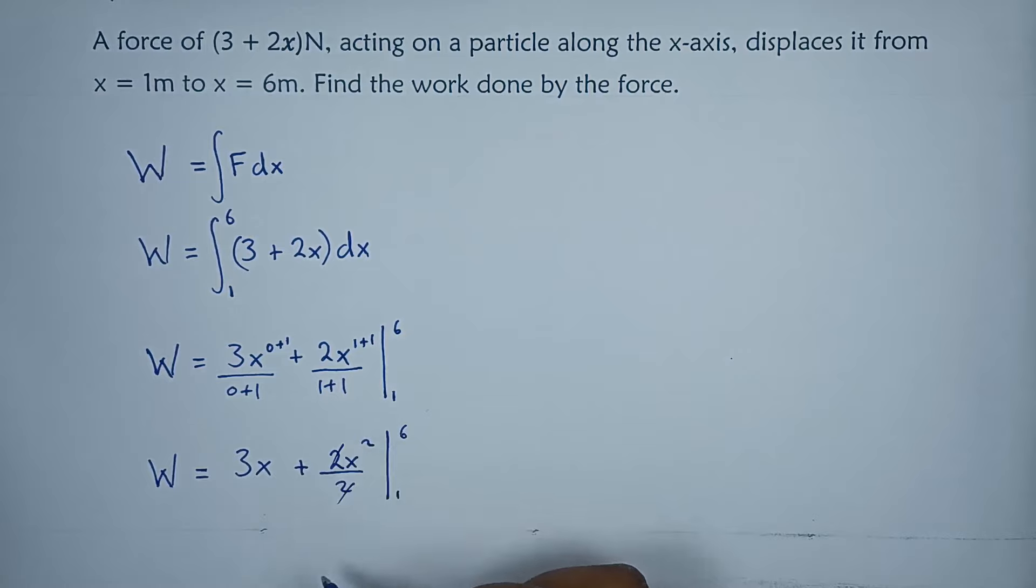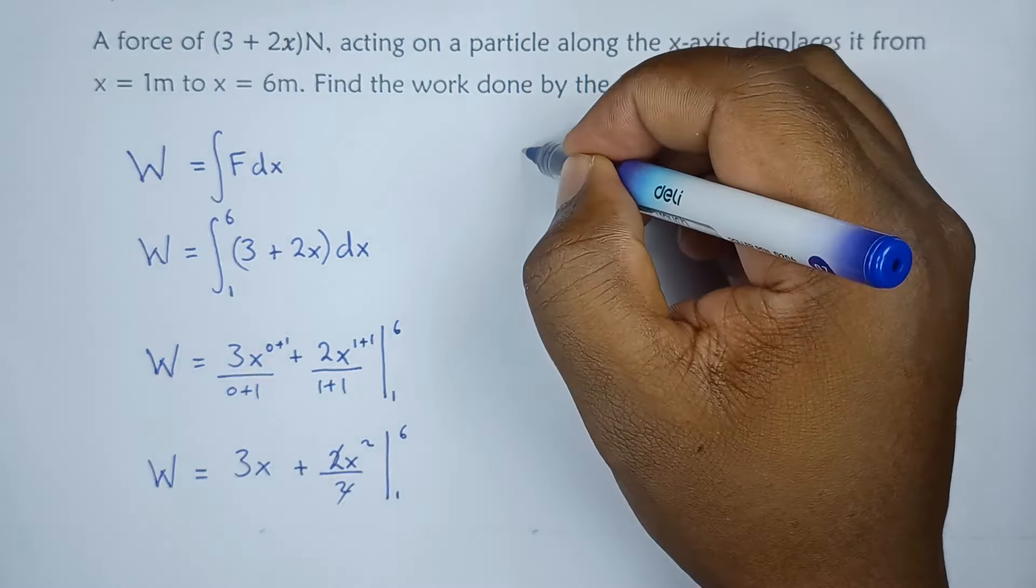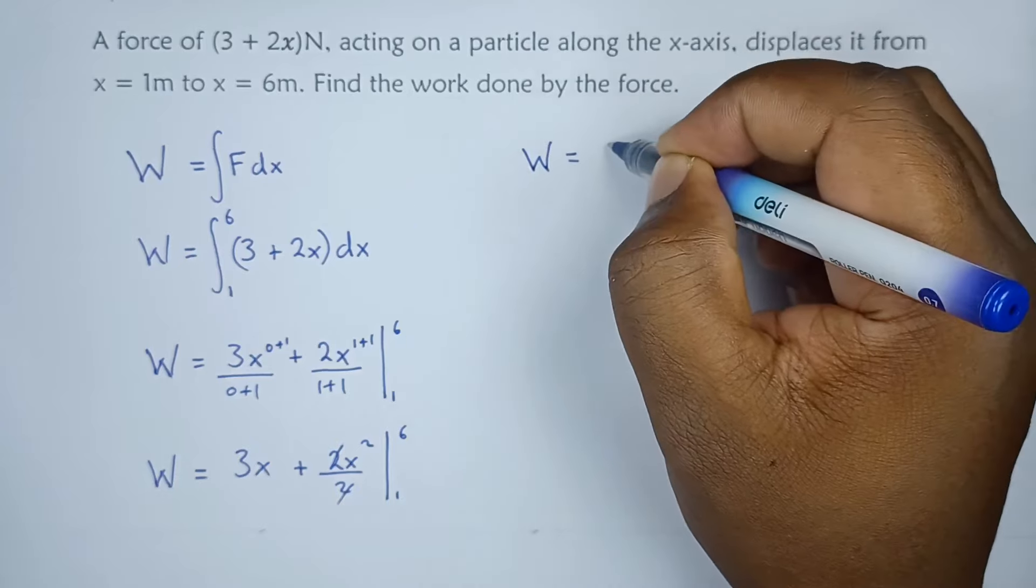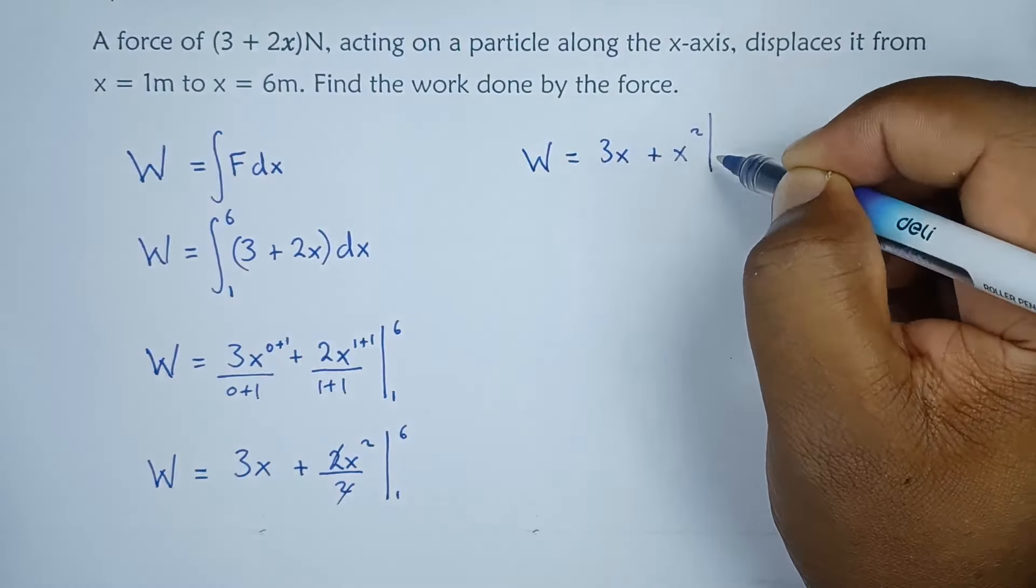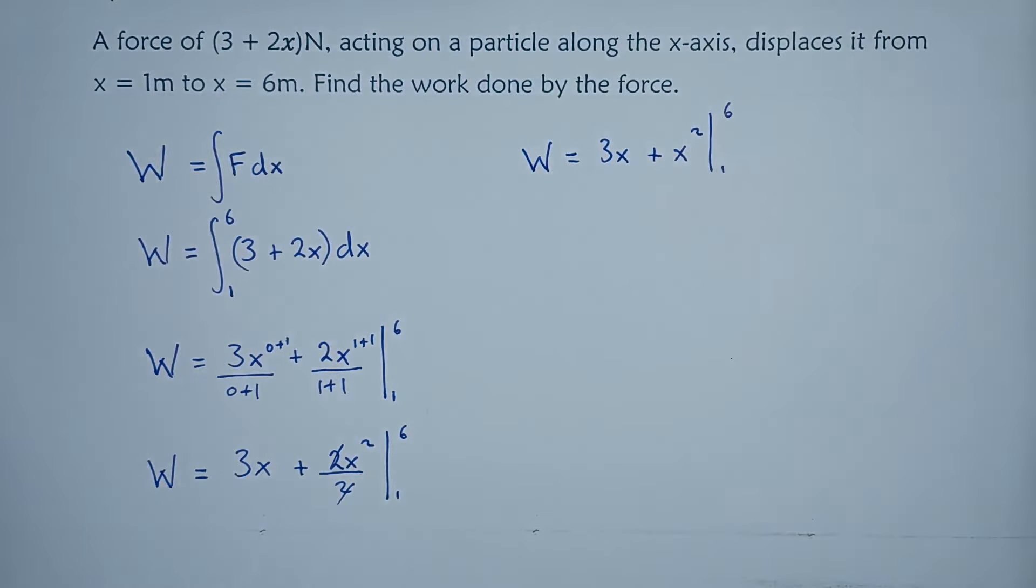These two can cancel out, leaving us with work done being equals to three x plus x squared, limit from one to six.